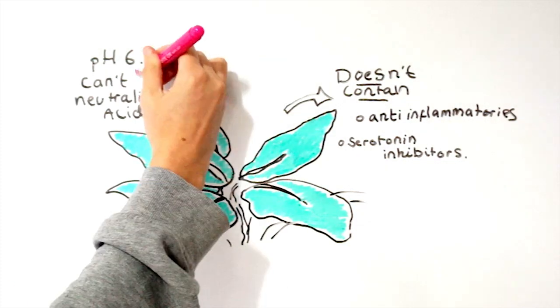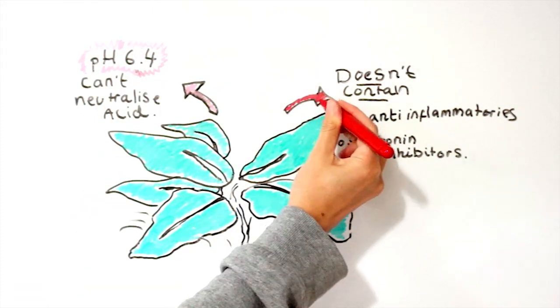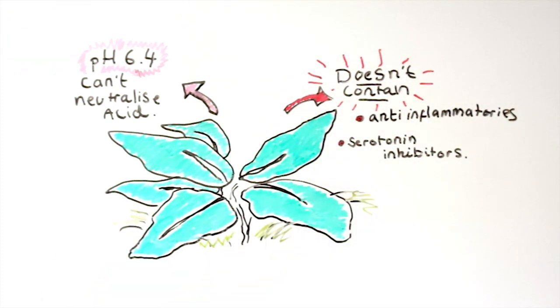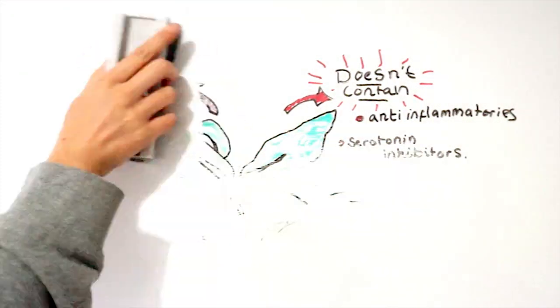Serotonin inhibitors are even rarer throughout nature than anti-inflammatories, and again are only found in herbs, so it's unlikely dock leaves will contain anything to inhibit the serotonin either.